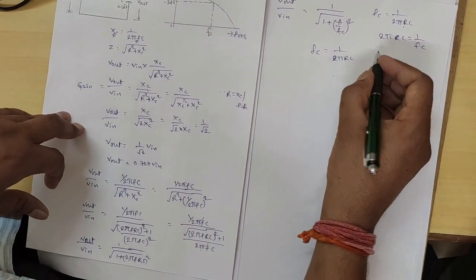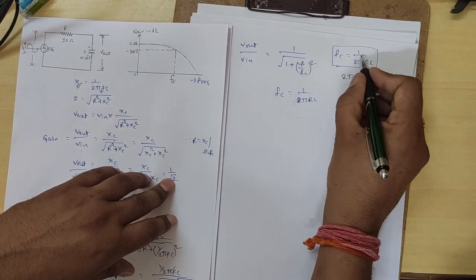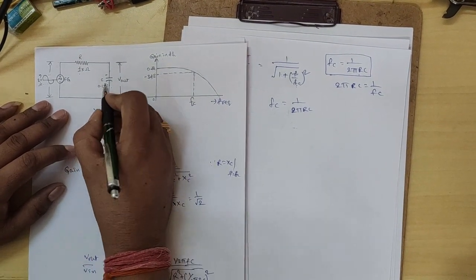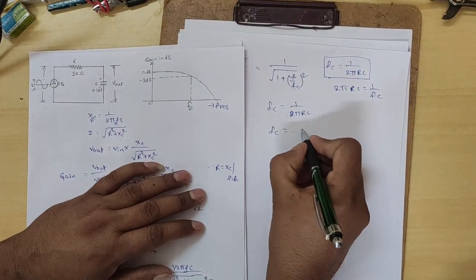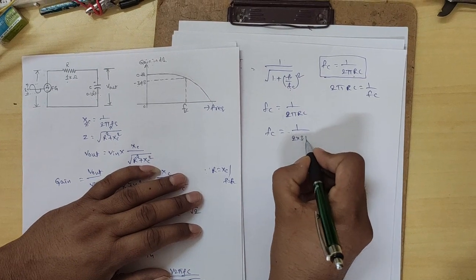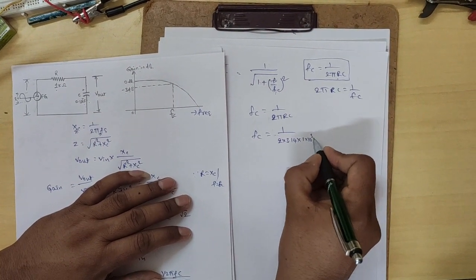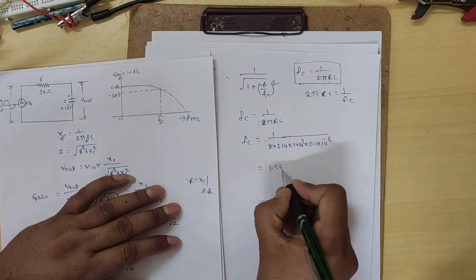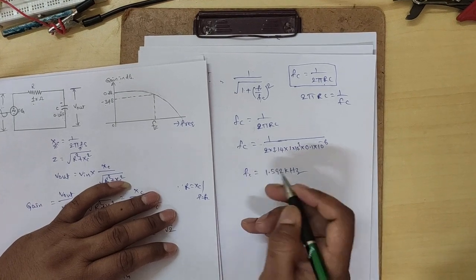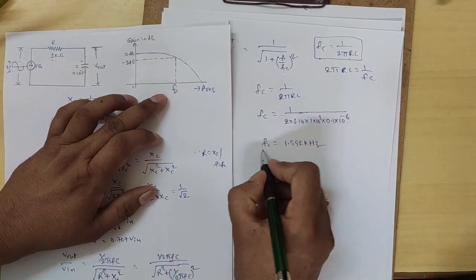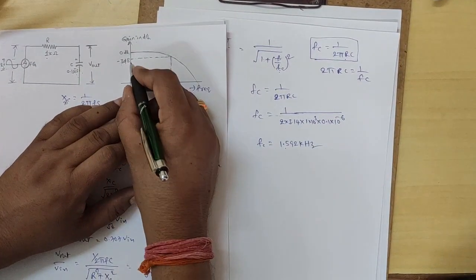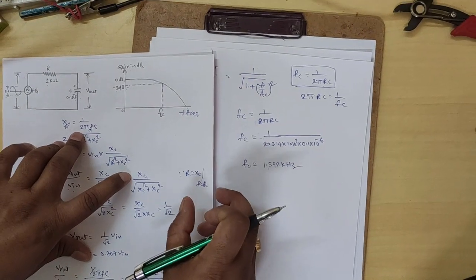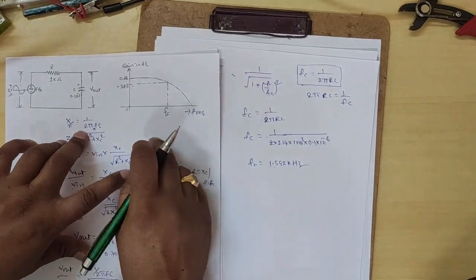The cutoff frequency Fc = 1/(2π × 1×10³ × 0.1×10⁻⁶) = 1.592 kHz. At this cutoff frequency on the graph, F = Fc = 1.592 kHz, and you will get 0.707 times the input voltage. Now let's do the practical.